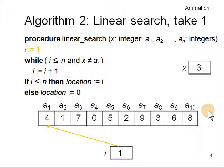You start with i equals 1. It is not equal to, i equal to 1. i is less than n and x is not equal to ai. 3 is not equal to 4. Then i equal to i plus 1. And go back. You look at this one. Keep doing that.